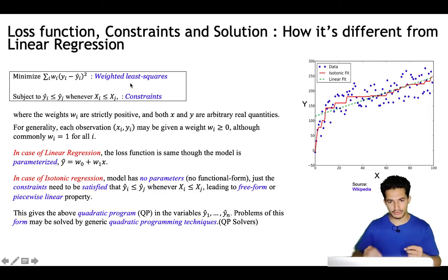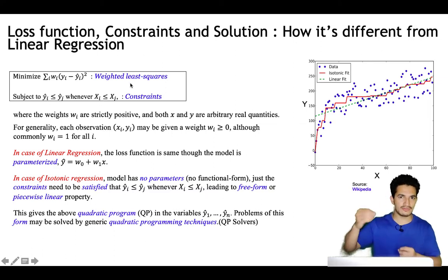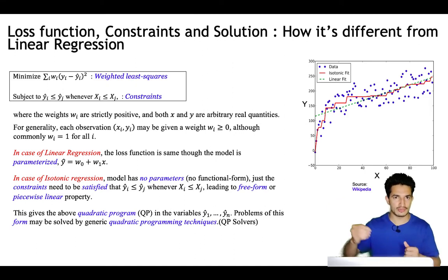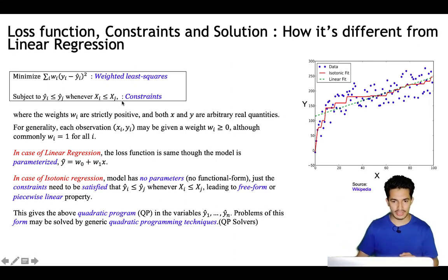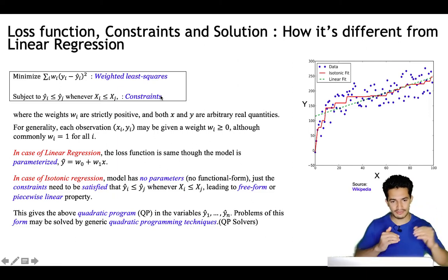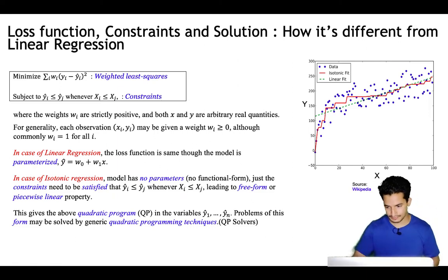For linear regression, a closed-form solution is possible and it can also be solved using gradient descent. For isotonic regression, where we have a minimization loss with constraints, it can be solved using a QP solver.